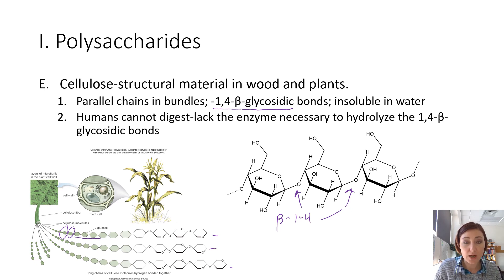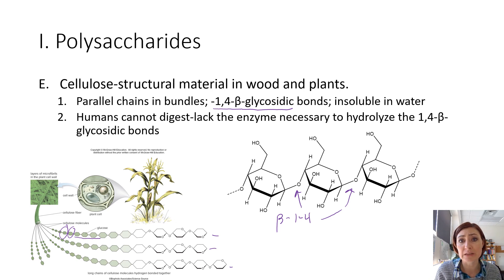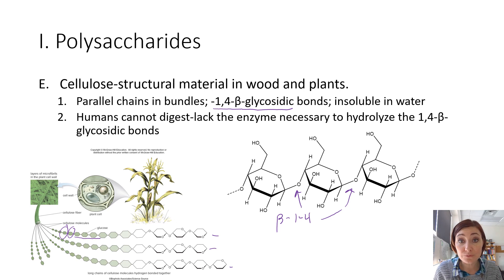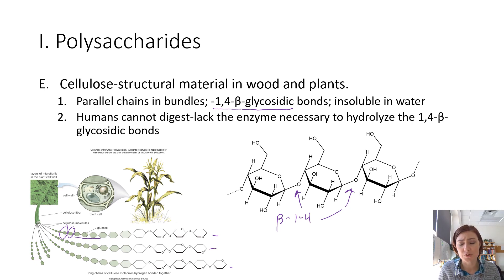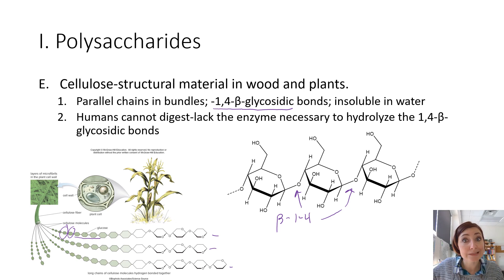When people talk about eating insoluble fibers, they're talking about eating plant material that contains cellulose. Insoluble fiber is very good for you to have a certain amount of. Think of the peel on an apple — that's the insoluble part, and the inside is your soluble fiber that you can break apart. You want a good amount of insoluble fiber because it acts like a roto-rooter on your colon, keeping everything moving.